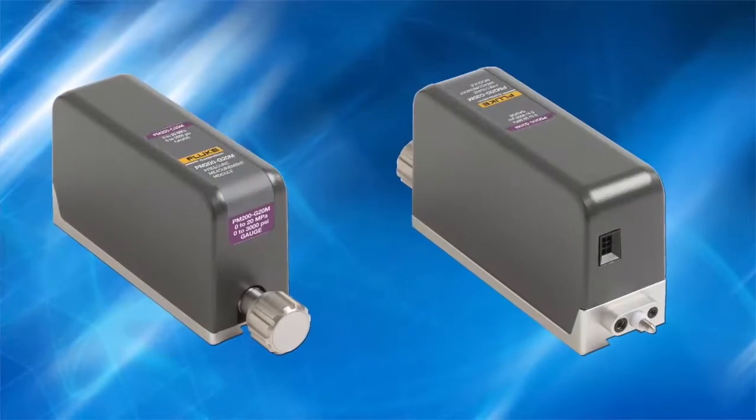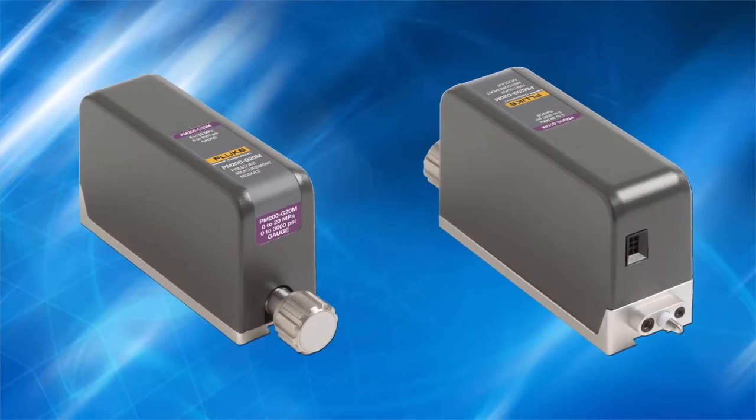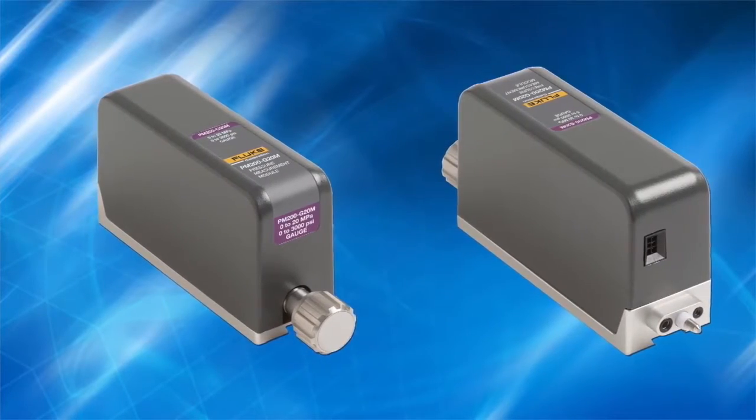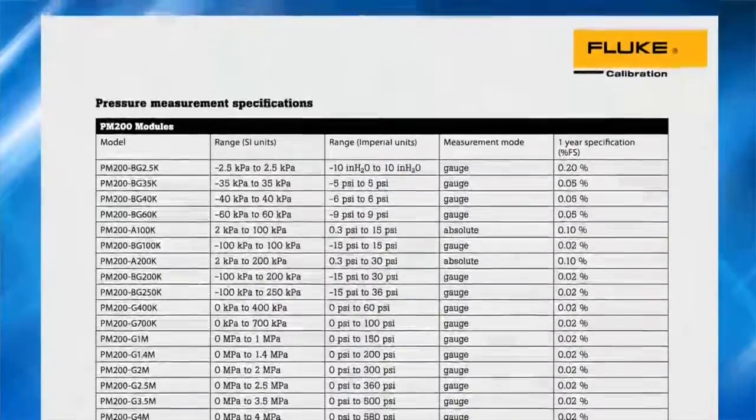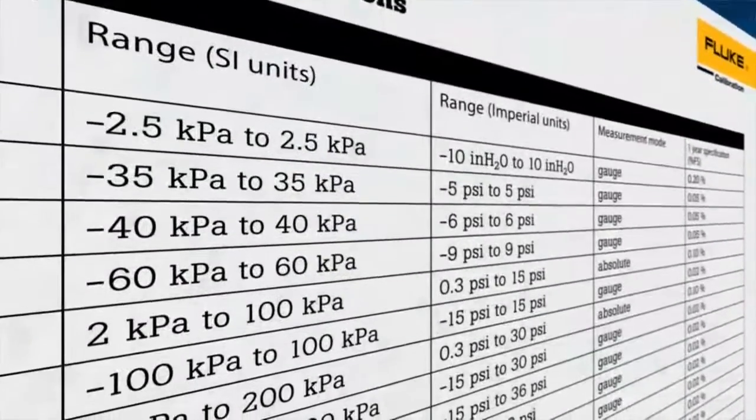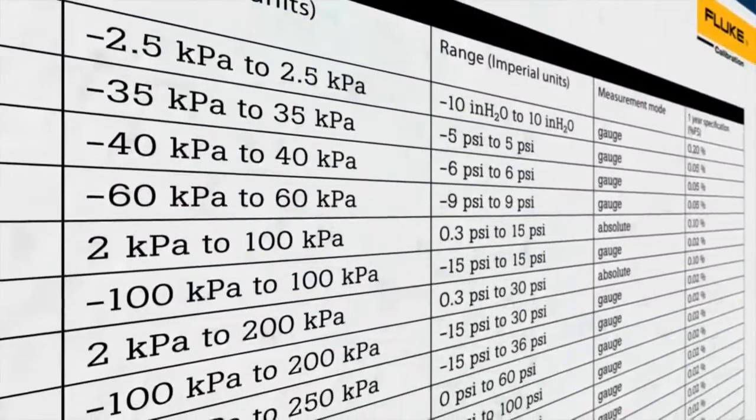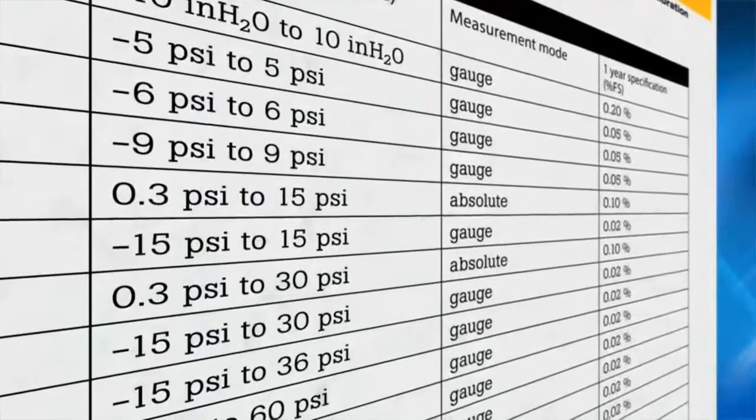The 2271A uses Fluke Calibration PM200 modules to measure pressure. With over 20 ranges to choose from, you can use the 2271A from vacuum to 20 MPa, or 3000 psi.